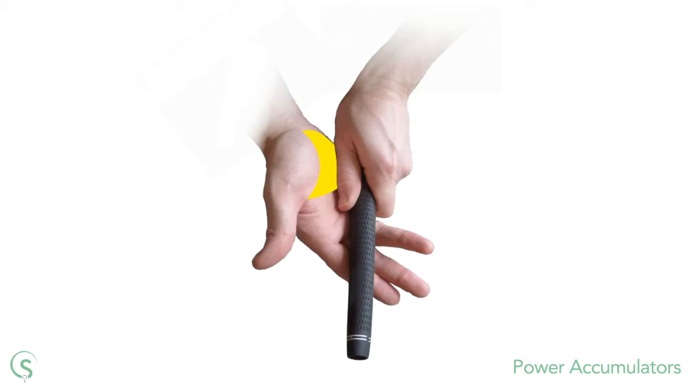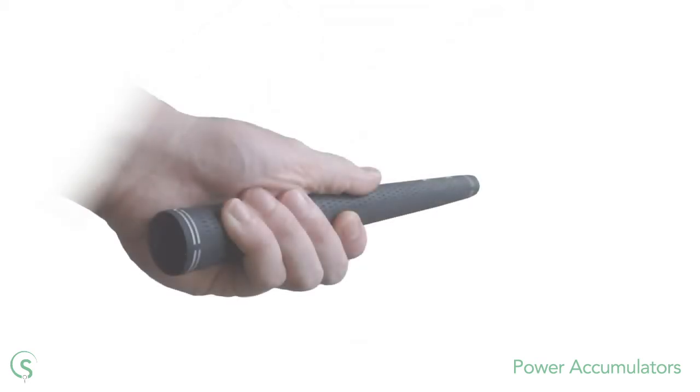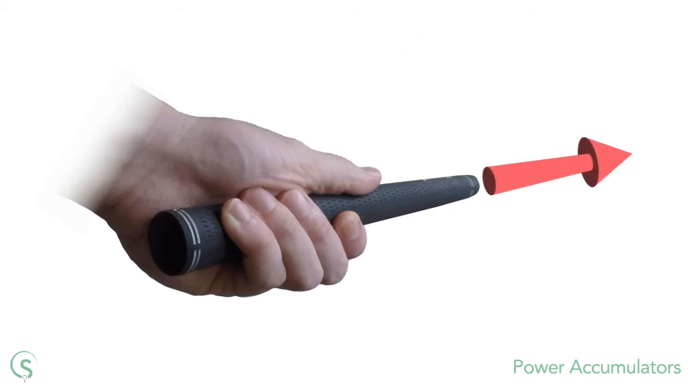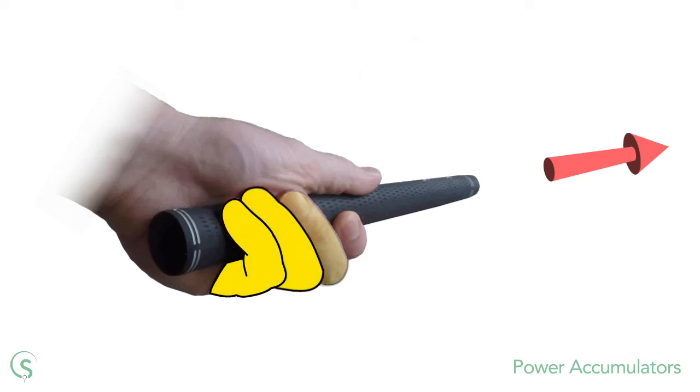If you're using centrifugal force to uncock the left wrist, then it's slightly different. Instead of feeling a part of the body pushing against the left arm or club, you're having to sense an outside force, the centrifugal reaction. The place to do this is in the last three fingers of the left hand. Here you can feel yourself pulling on the club during a downswing, and then centrifugal force attempting to pull the club from your hands and uncocking the left wrist in the process.